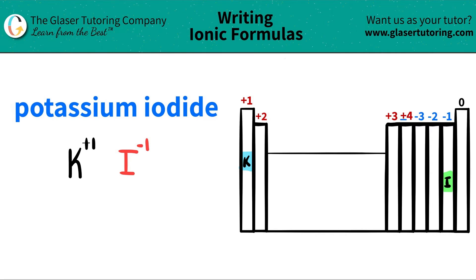Now I have both elements. I have both charges so I'm ready to rock and roll. All we got to do is just crisscross these to find out how many of each I need. This plus one crisscrosses down telling me that I need one iodide and this negative one crisscrosses down telling me that I need one potassium.